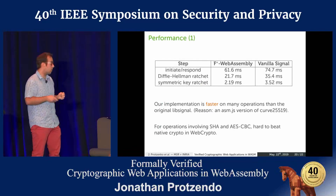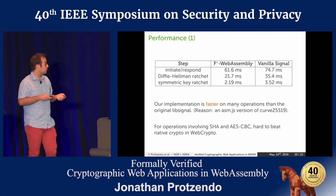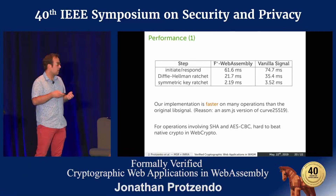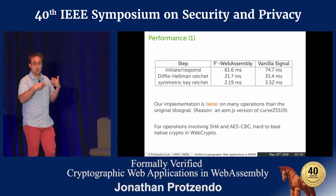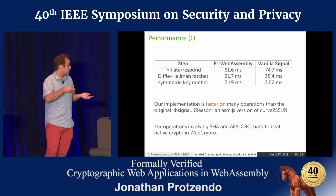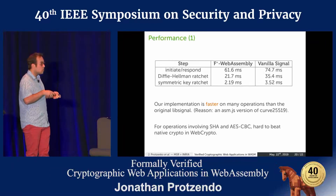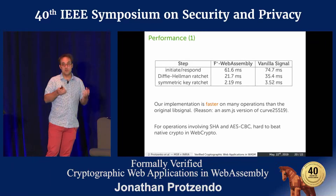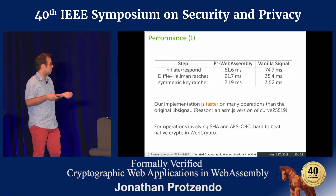In terms of performance, we compared our implementation of libsignal with the vanilla implementation of libsignal, and we're actually faster than the original implementation on several core operations. The reason is that previously, because Curve 25519 is not included in WebCrypto, Signal would ship their own version of Curve 25519 compiled to a predecessor of WebAssembly called asm.js, and our implementation is faster. For protocol actions that involve primitives such as SHA and AES-CBC, these are offered natively in WebCrypto with potentially vectorized implementations, so we're a little bit slower in those cases.